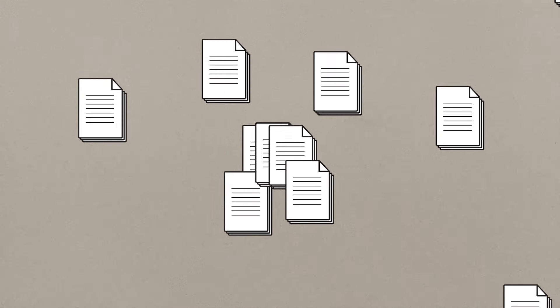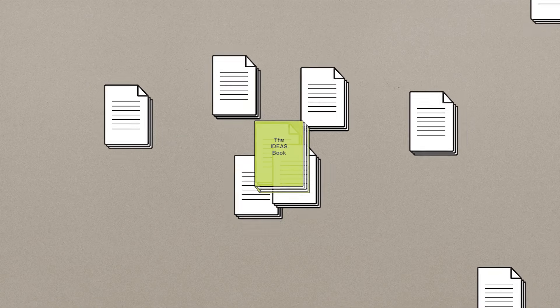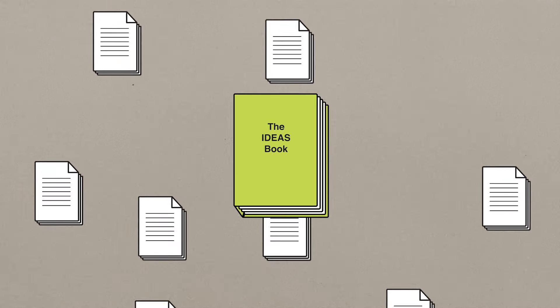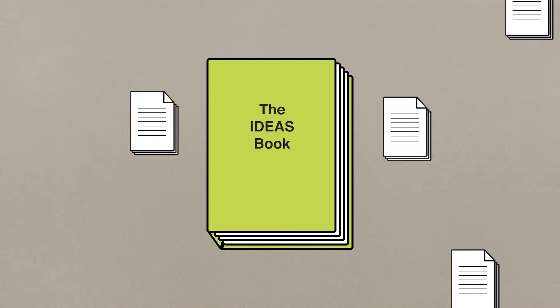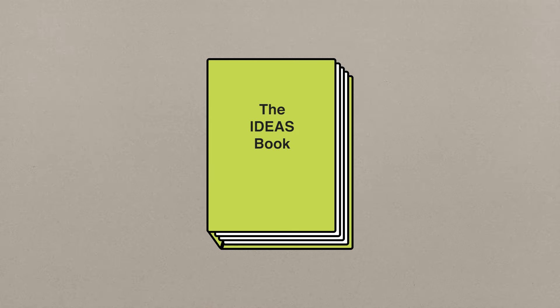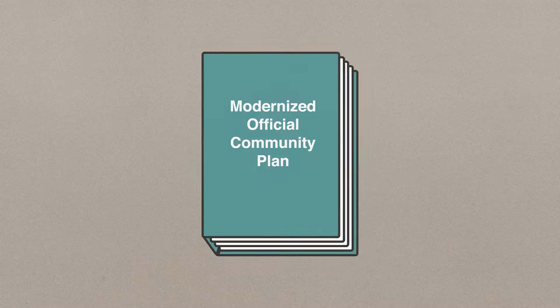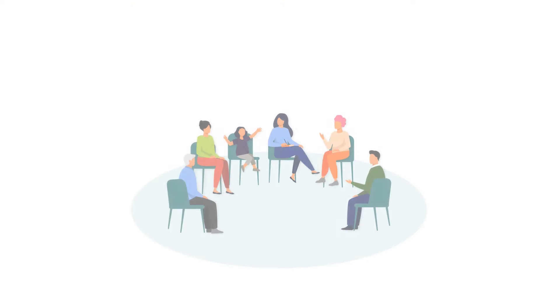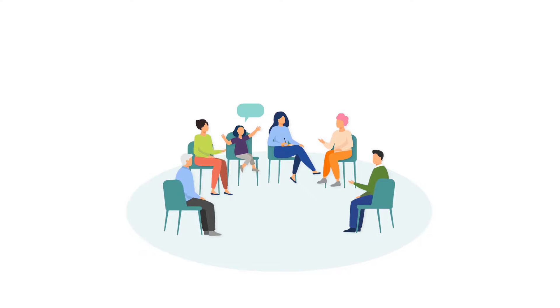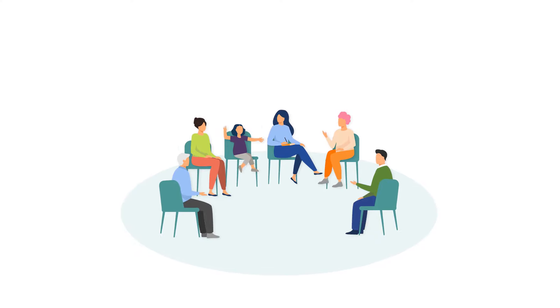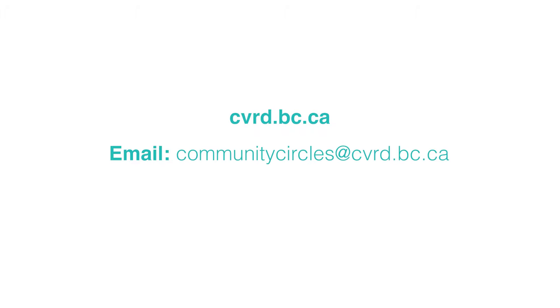Our project team will review all the notes from each community circle and organize them into the eight policy goals. The result will be a collective document called the Ideas Book. That document will be made available to the public and will be used to inform our Modernized Official Community Plan, making sure that our plan for the future reflects the voices of everyday people who call the Cowichan Valley home. For more information about community circles, please visit our website or email communitycircles@cvrd.bc.ca.